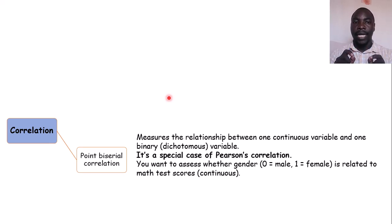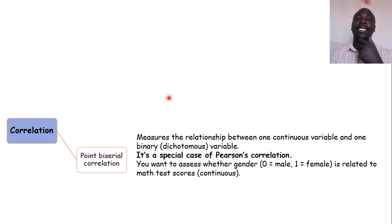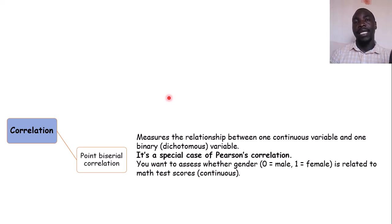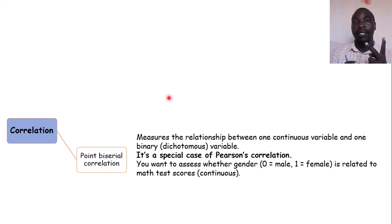The p-value you get from point-biserial correlation is similar to what you would get if you ran an independent samples t-test, which compares a numerical outcome against a categorical variable with two levels.